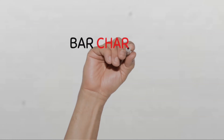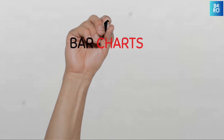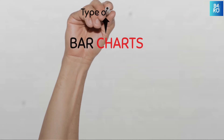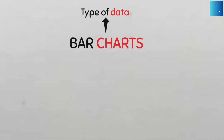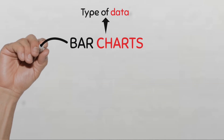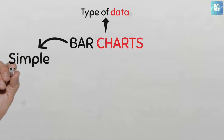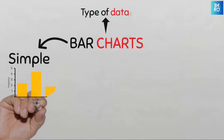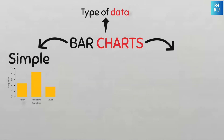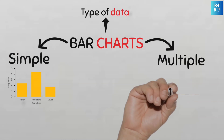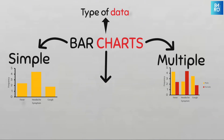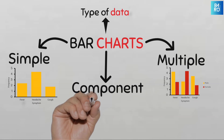There are several types of bar graphs depending on the type of data you want to present and the story you want to tell. The three most common ones include a simple bar chart, multiple bar chart, and component bar charts.